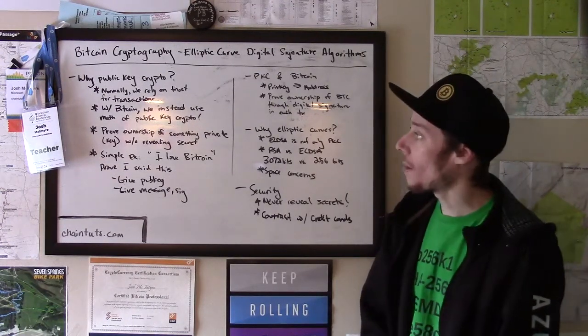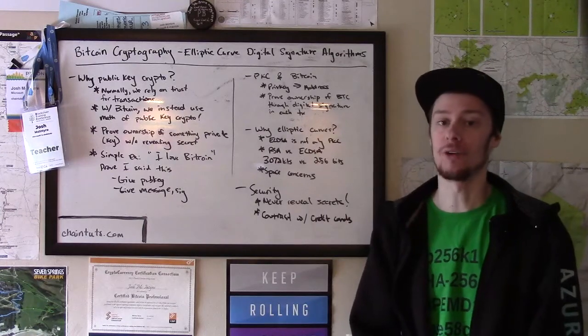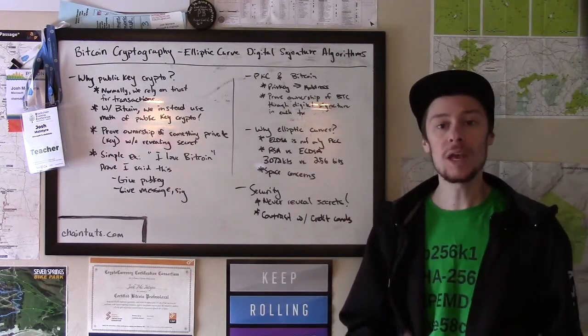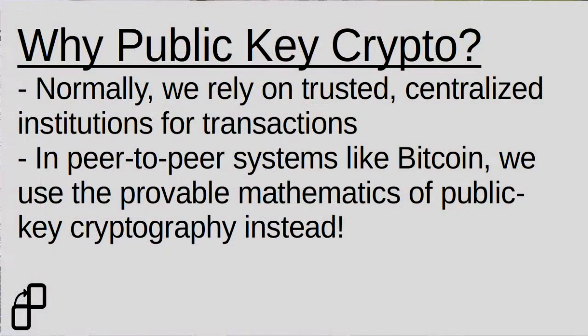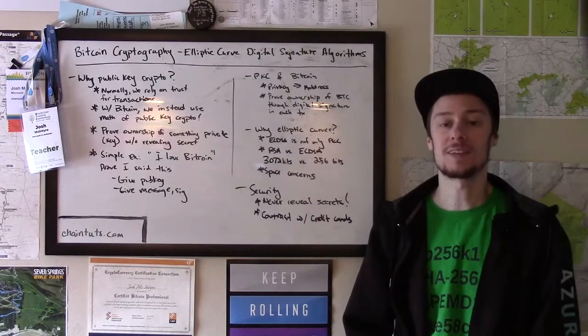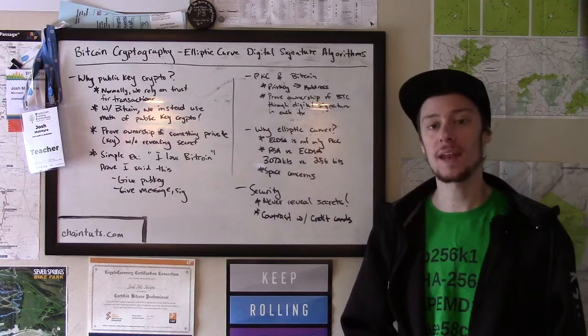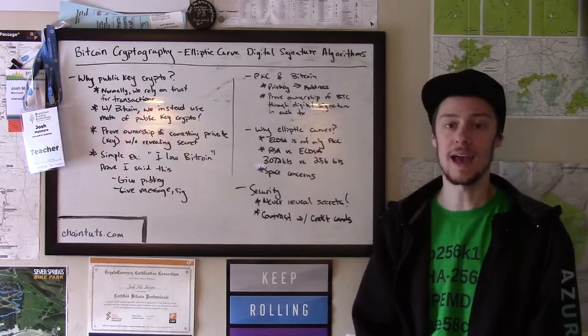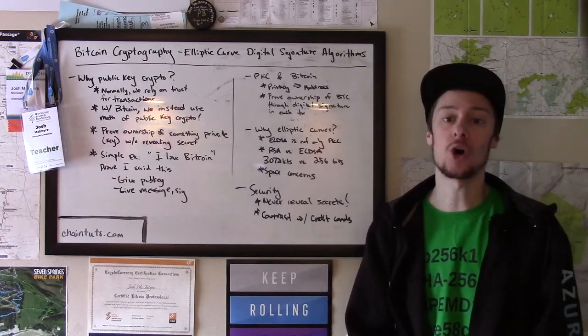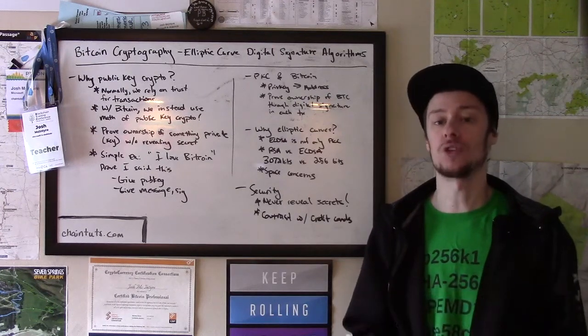First, we need to talk about why public key cryptography and what is it. When we normally transact with each other in today's financial systems, we use trusted intermediaries. For example, if you send a friend money via PayPal, that transaction is routed through PayPal's corporation, and they do the legwork of determining that you have the amount of money that you can send and that money gets credited to their account. This model fundamentally relies on trust in those centralized institutions.